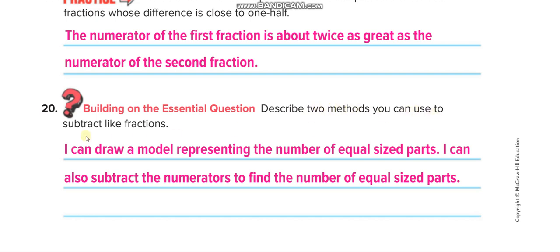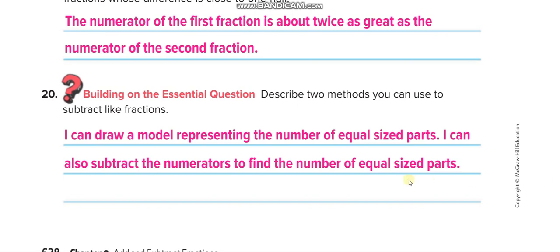Describe two methods to subtract like fractions. First, you can draw a model representing equal-size parts. Second, you can subtract the numerators only to find the number of equal-size parts and keep the denominators the same. I hope you guys understand the lesson. If you do, please like this video, subscribe to Learn Math with Mr. Saad, and press the bell icon to get notified for every new video. Thank you so much, have a nice day!